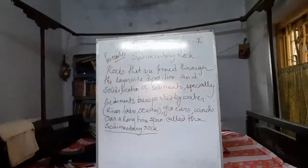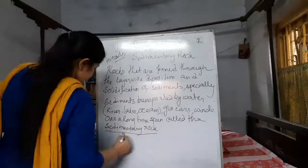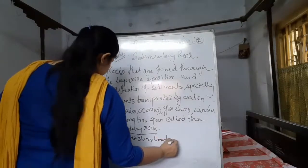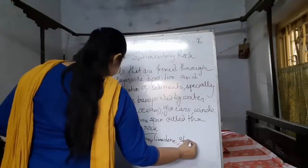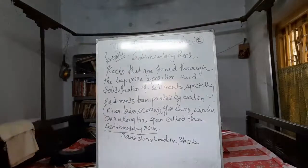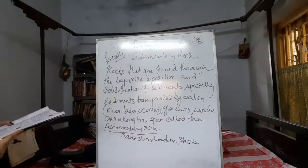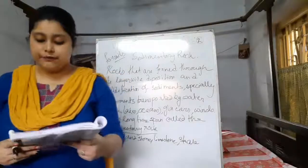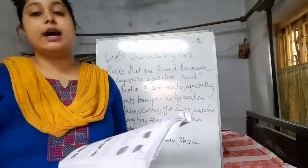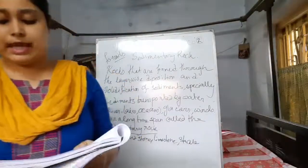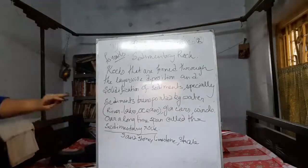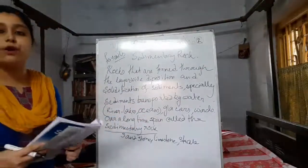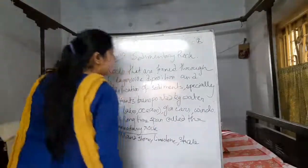Some examples of sedimentary rocks are sandstone, limestone, and shale. These rocks are deposited in layers and extensively cover the earth's current land surface. They exist as a thin sheet over the earth's crust, which consists mainly of igneous and metamorphic rocks. From igneous rock, sedimentary rocks are formed, and from sedimentary rocks, metamorphic rocks will form. So the next topic is metamorphic rock.